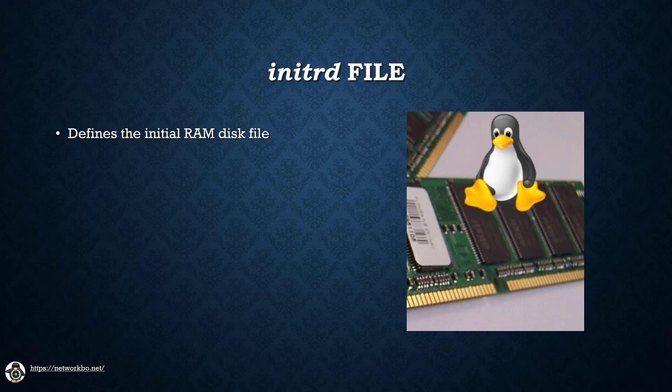If you install new hardware that is required to be visible at boot, you must modify the initrd file. This file defines the initial RAM disk file which contains drivers necessary for the kernel to interact with the system hardware. Think of it as Windows' version of device manager. In Red Hat versions of Linux you will use the mkinitrd command to create a new initrd RAM disk image to contain the modules for the new hardware you are installing.